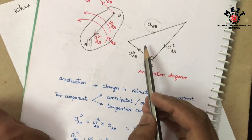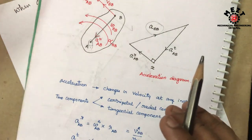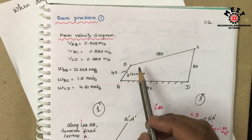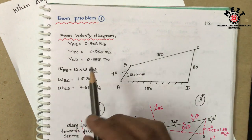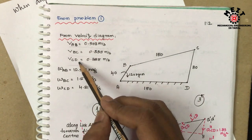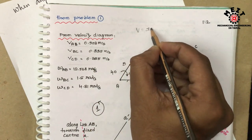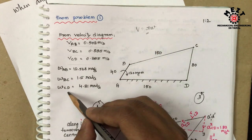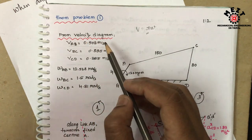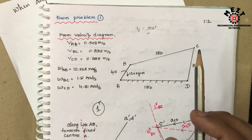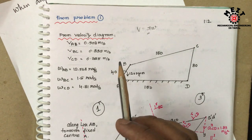So we can find the resultant acceleration. We should clearly know the velocity values, and after that we have to calculate the radial acceleration and tangential acceleration. We have already solved the problem using the velocity diagram. From the velocity diagram we get all velocities — A, B, C, D. And from the velocity value V = Rω, we can calculate angular velocity. R is the link length, so we can find omega of AB, omega of BC, omega of CD. Without the velocity diagram, we cannot draw the acceleration diagram.